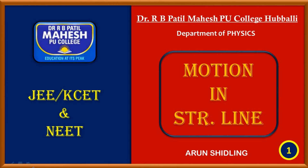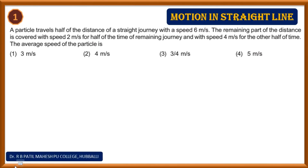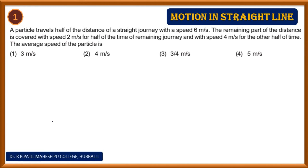Hello dear students, welcome to the JEE/NEET class on the chapter 'Motion in a Straight Line'. Let us have a look at the first question. A particle travels half the distance of a straight journey with speed 6 m/s, and the remaining distance is covered with 2 m/s for the first half time and 4 m/s for the remaining half time. We have to find the average speed for this complete journey.